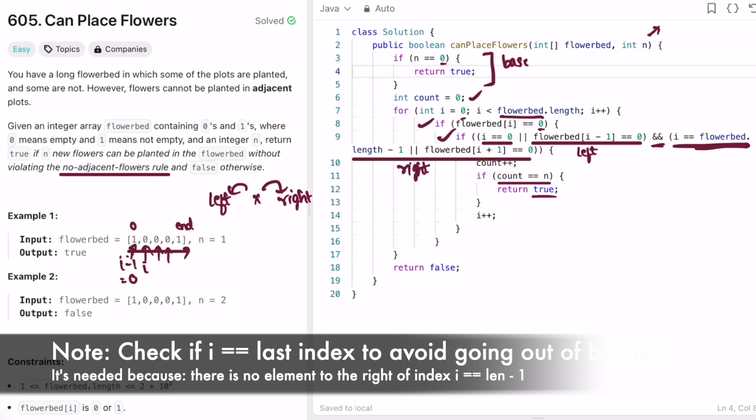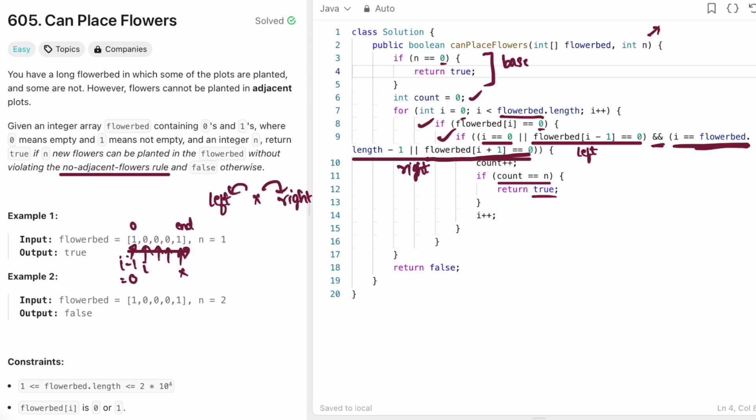So I'm checking if it is the rightmost index, or if the element to the right, i plus one, is a zero. So if i plus one is a zero or if it is the rightmost index, we increment count. And immediately inside this if statement, we're checking another if statement: if count is equal to n, so if we have placed all the new flowers, then we return true. And before starting the new iteration, I'm incrementing i to move further.